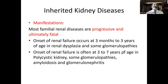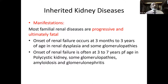Hereditary conditions — how are they manifested? These are referred to as familial renal diseases. They are progressive and invariably ultimately fatal. Onset of renal failure occurs at three months to three years of age. Examples include renal dysplasia and some glomerulopathies. Onset could be as late as three to seven years of age in conditions like polycystic kidney disease, some glomerulopathies.